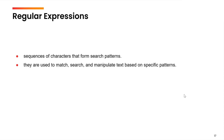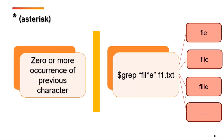The first character available for forming regular expressions is star. Star means 0 or more occurrences of the previous character. So if I say grep 'fil*e' in a file f1.txt, this means I am matching f followed by i followed by 0 or more occurrences of l and then e. So I am looking for patterns such as fie, file, fille, and so on.